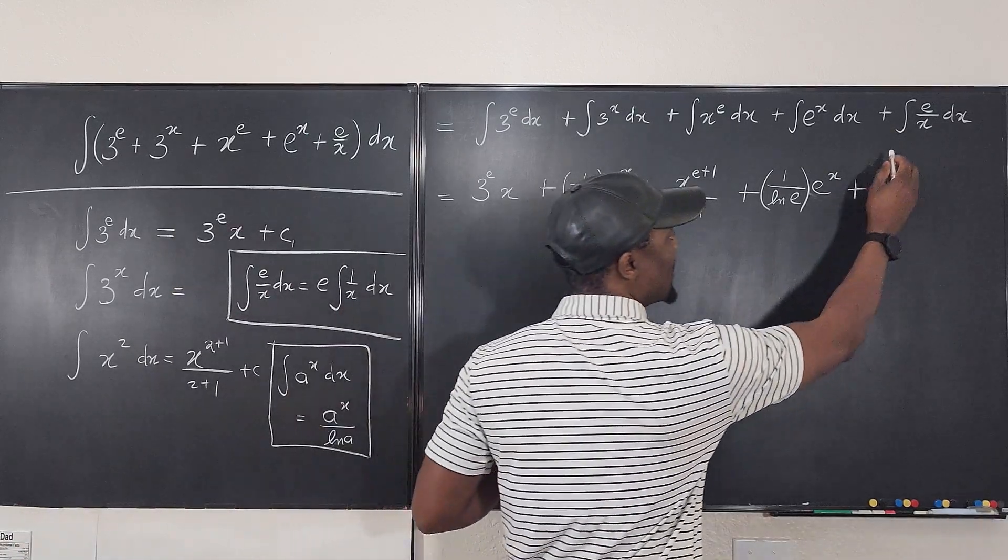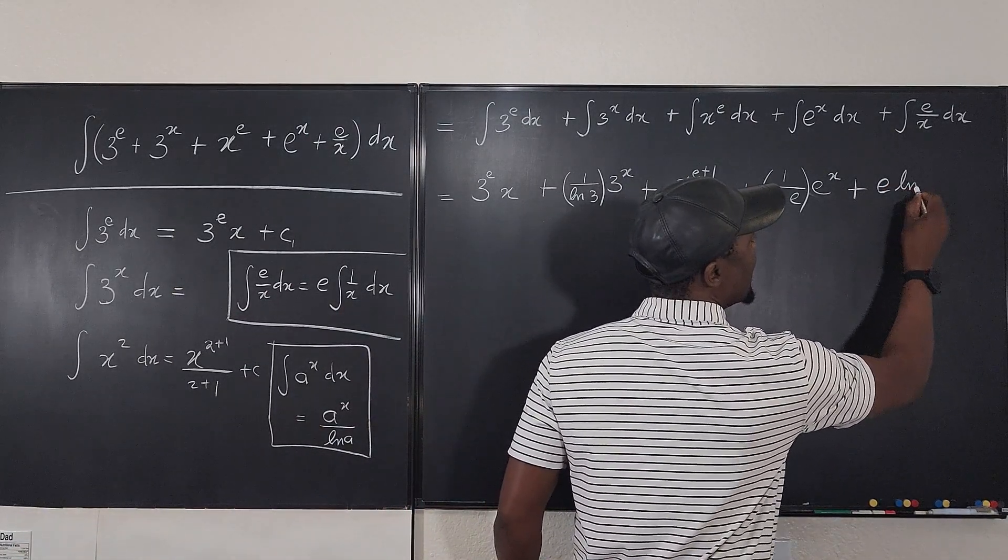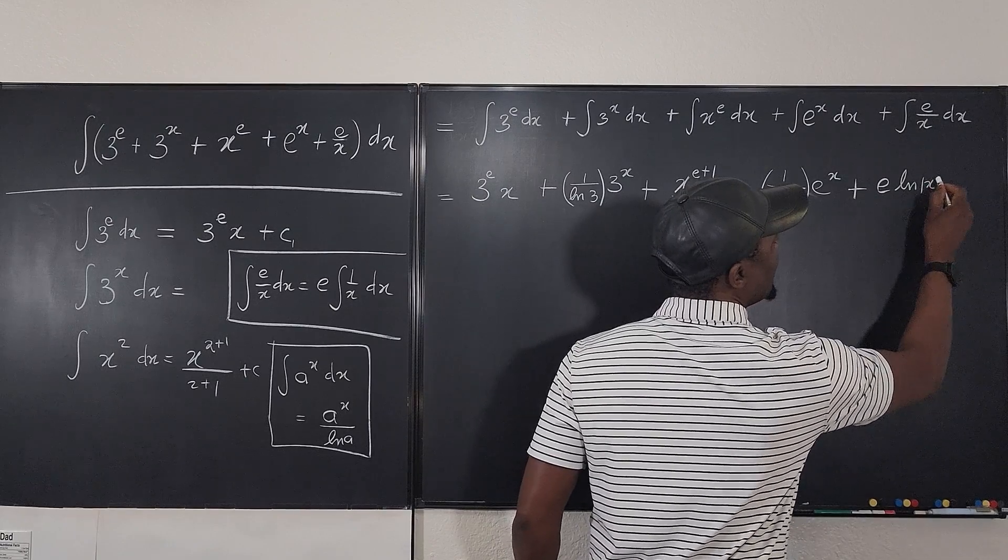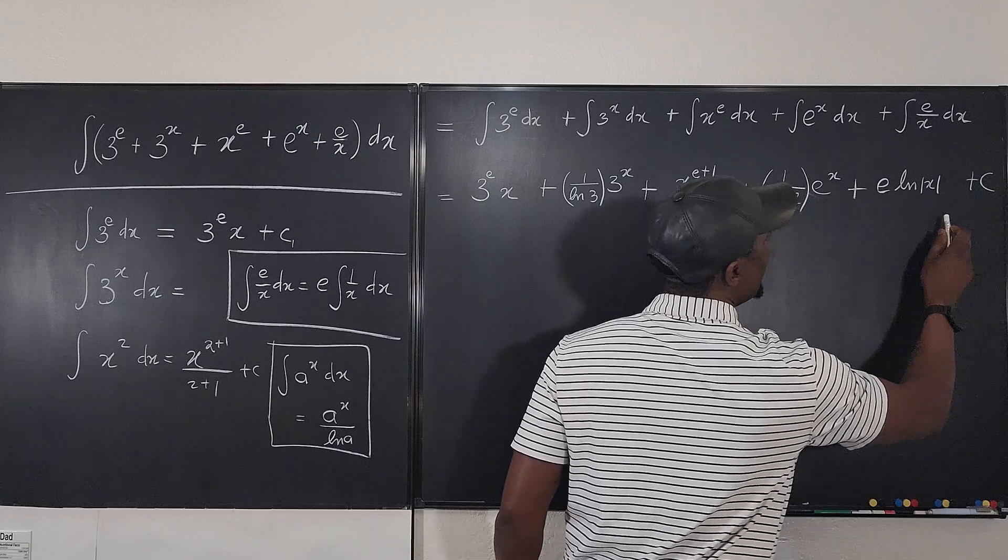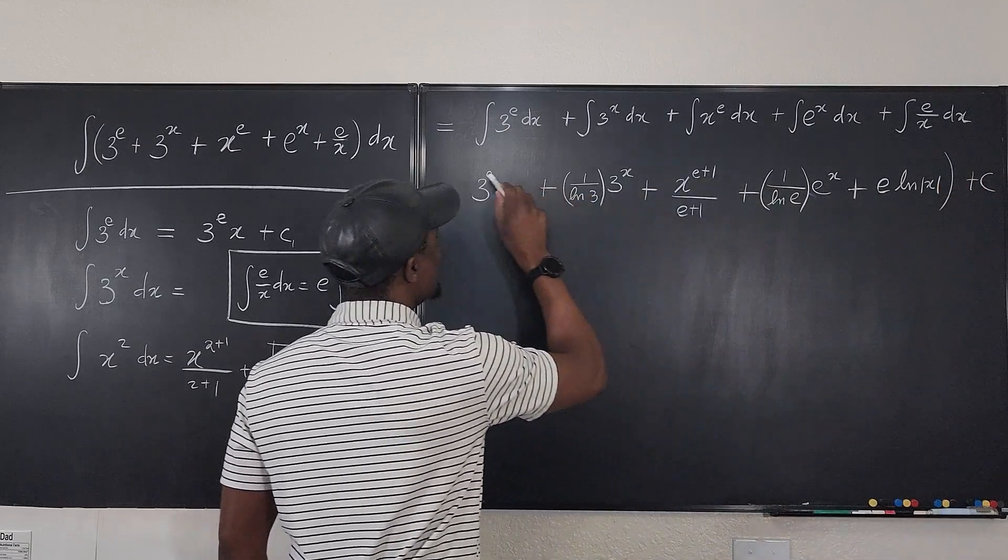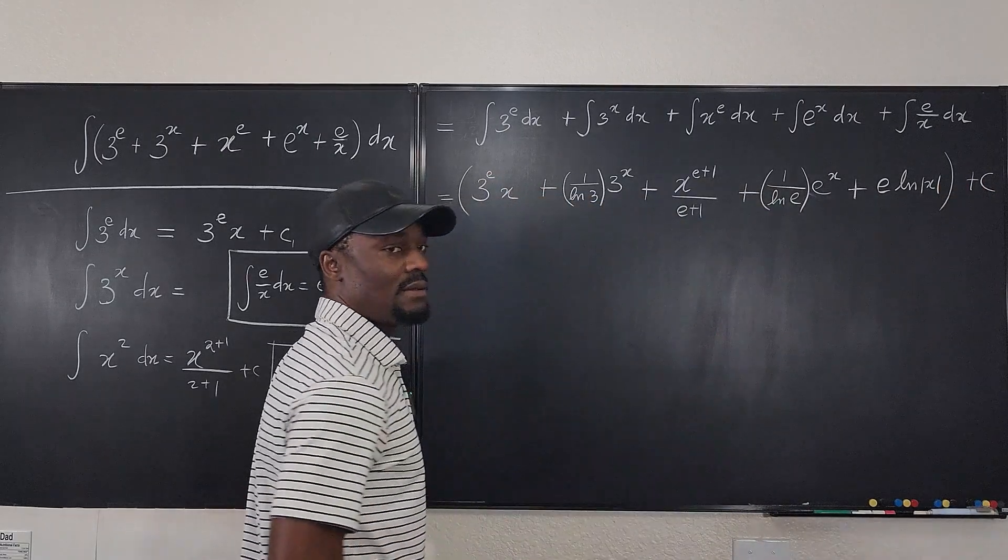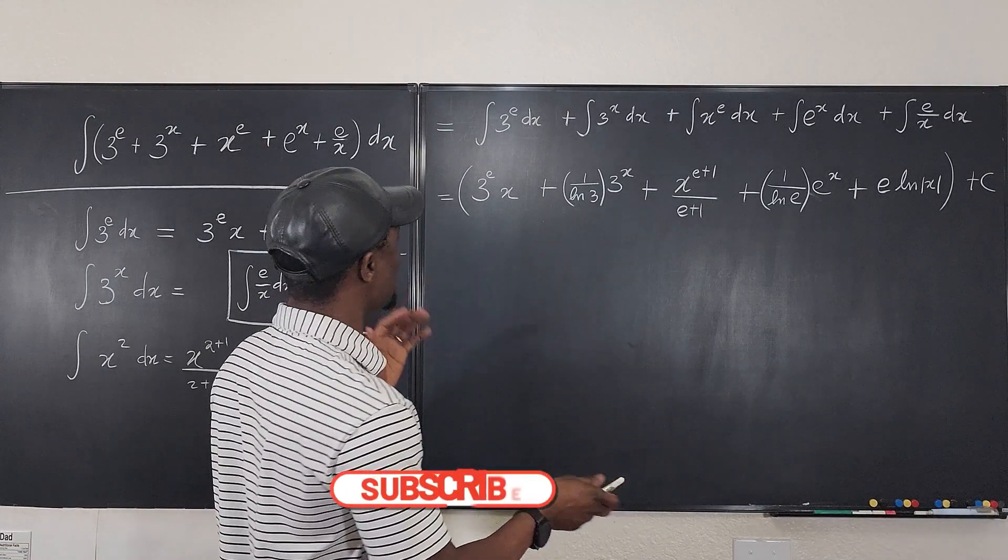So the answer to this is basically e times the natural log of x. Let's put the absolute value there. And now we can put a giant plus c. So it's all of this plus c. Is there any simplification we can do?